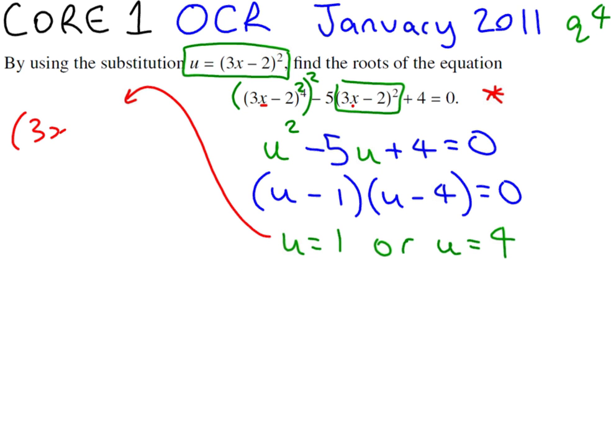that 3x minus 2 all squared equals 1 or u equals 4, which we will look at in a minute. Now it's very important that when you square root both sides, you do not forget your plus and minus. So whenever you square root an equation, you need plus or minus of your answer. The square root of 1 is just 1.